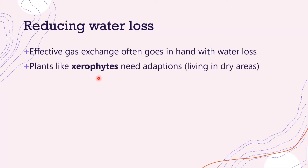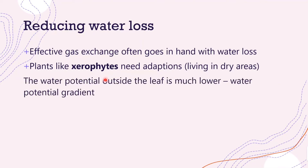Plants like xerophytes need adaptations. These are plants that live in dry areas with very limited water, like deserts. If the water potential outside the leaf is lower than inside the leaf, water will move down this water potential gradient — so if the atmosphere has a lower water potential, water inside the leaf will move out of the leaf.